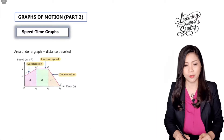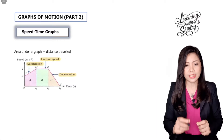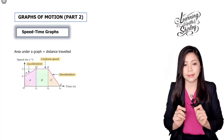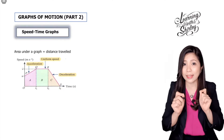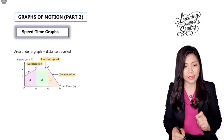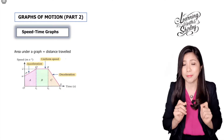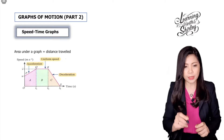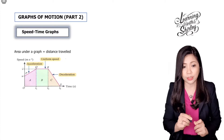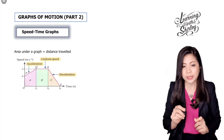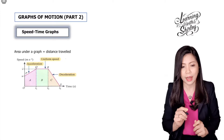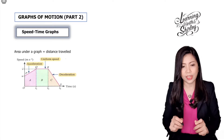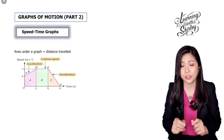Let's look at this graph. The first line is PQ, the second line is QR, and the third line is RS. We're going to analyze these three lines and see what they mean. PQ means acceleration, QR means uniform speed, and RS means deceleration.